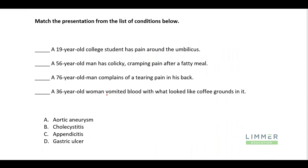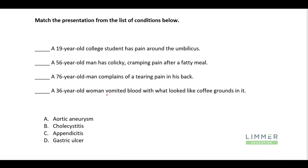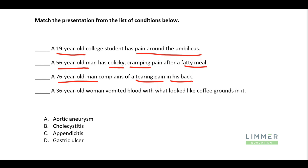Matching presentations. A 19-year-old college student has pain around the umbilicus — the belly button. A 56-year-old man has colicky, cramping pain after a fatty meal. A 76-year-old man complains of a tearing pain in his back. And a 36-year-old woman vomited blood with coffee grounds in it.